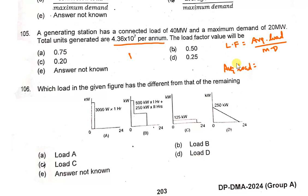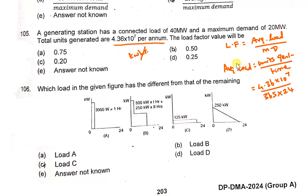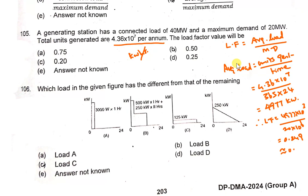Units generated per annum divided by 365 days × 24 hours gives an average load of approximately 4977 kilowatt. Therefore, load factor = 4977 × 10³ divided by maximum demand of 20 × 10⁶, which gives approximately 0.249, so we take 0.25.